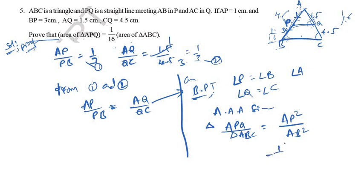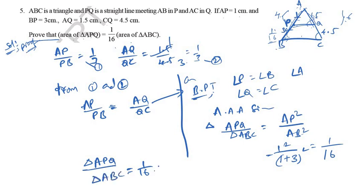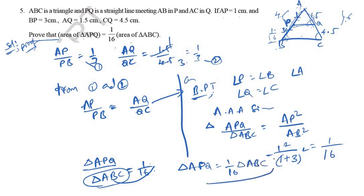Area of triangle APQ / area of triangle ABC = AP² / AB² = 1² / (1+3)² = 1/16. Therefore, area of triangle APQ = (1/16) × area of triangle ABC. This is what we needed to prove.